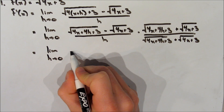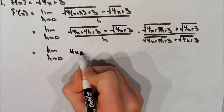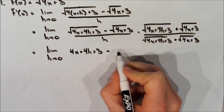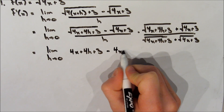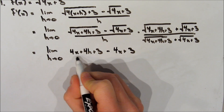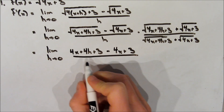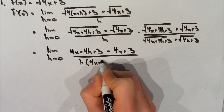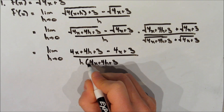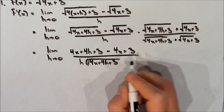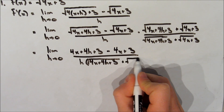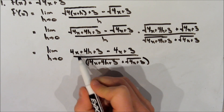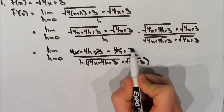The first term gives us 4x plus 4h plus 3 — we remove the square root sign. The middle terms both cancel because one is positive and one is negative. The last term is 4x plus 3 with the square root sign removed. On the bottom, we multiply h by the square root of 4x plus 4h plus 3, plus the square root of 4x plus 3.